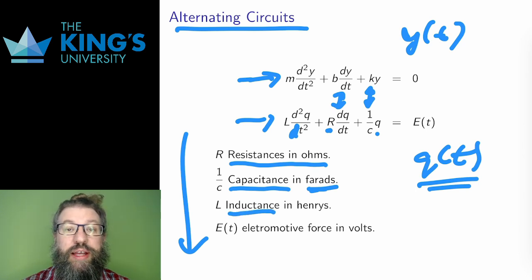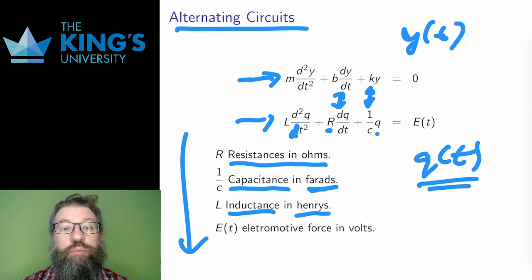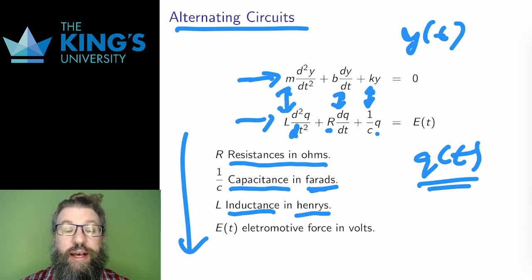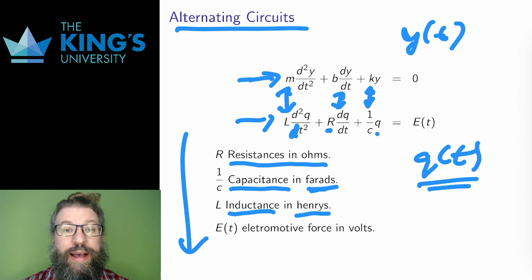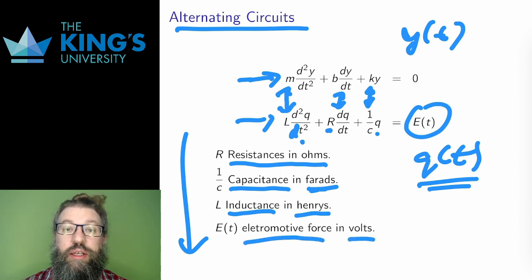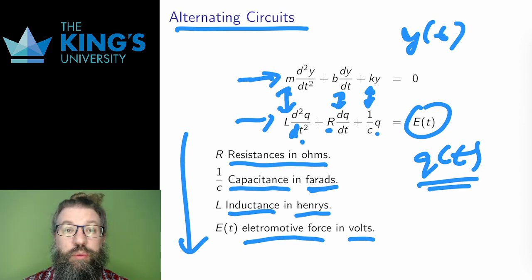Inductors are storage devices for electrical energy in magnetic fields. They have a measurement L called inductance, which has units of Henrys. Inductors block alternating currents; as such they represent the difficulty of moving charge through the system. In the harmonic system, the difficulty of moving the object is its mass — indeed, a simple definition of mass is a measure of how difficult it is to move an object. As the analog of mass, inductance should show up as the coefficient of the second derivative of q. Electromotive forces are external forces to the system, from batteries to generators. They are written E of t and have units of volts. Like the forces that add movement to a harmonic system, these electromotive forces add charge to a circuit. The electromotive force should be the non-homogeneous function in a non-homogeneous DE.